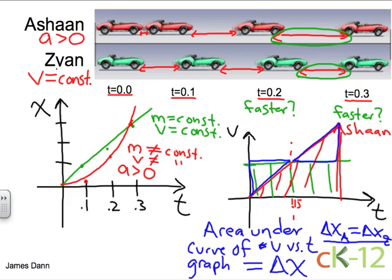So since Ashaan needs area here, equal to this area here, we know that this being the halfway point of 0.15, we know that at 0.2, Ashaan is going faster than Zion. So let's look at this again.